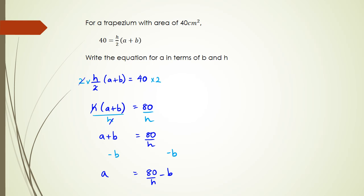That's one way of solving this problem. I'm going to show you guys another method. I've got h over 2 times a plus b equals 40. The other method you could have done is you could have actually expanded the brackets, so h over 2 times a, then h over 2 times b.